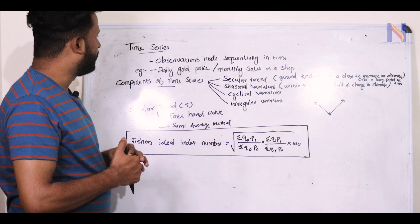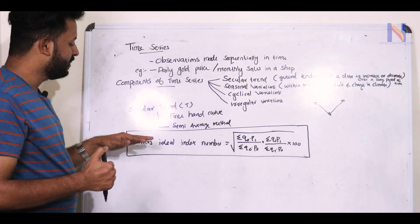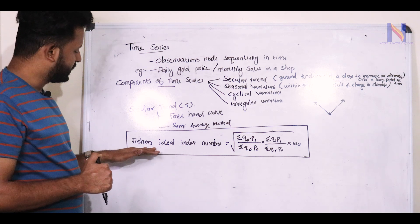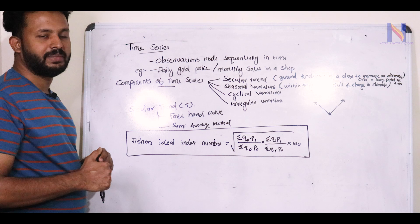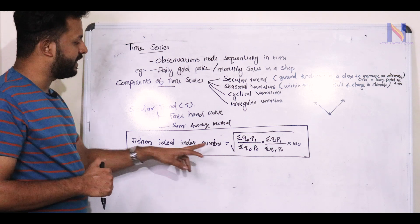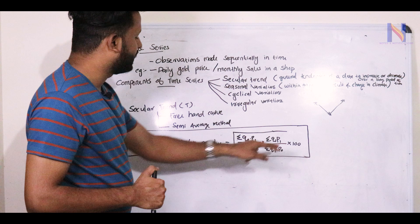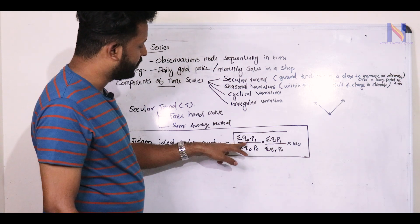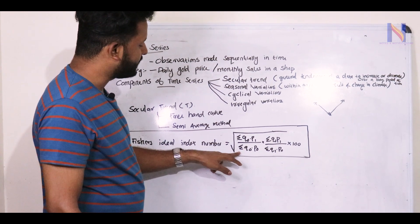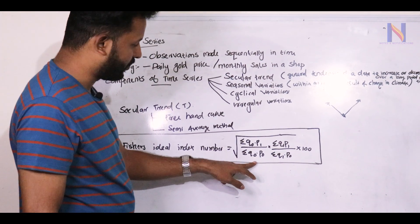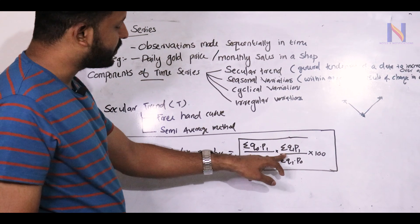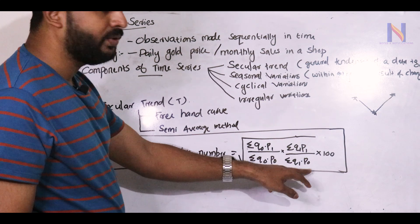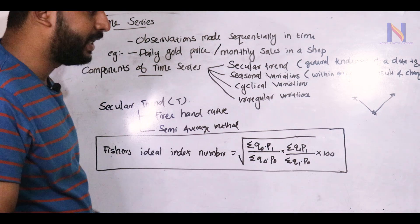In this module, the first important topic is Index Numbers. This is the Fischer's Ideal Index Number method. The equation is: root of [Σ(q0·p1)/Σ(q0·p0)] × [Σ(q1·p1)/Σ(q1·p0)] × 100.